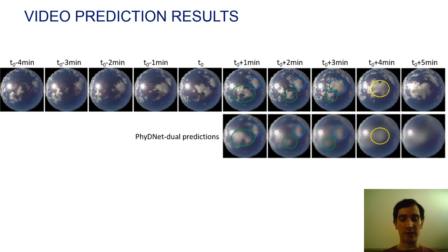The model takes 5 minutes of past images and predicts the 5 following images. We can see that this problem is very challenging because in 5 minutes there is a large cloud motion. The two clouds that are depicted in blue and green are moving closer and then finally merging into the yellow cloud.